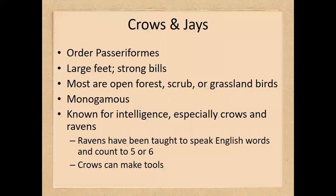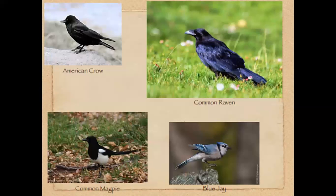Crows and jays are some of our most intelligent birds. They have large feet and strong builds for their size, and they are monogamous. They can not only mimic speech, they can count, make tools, and we are frequently impressed by their intelligence. They may not be the prettiest birds, but they are remarkably intelligent. Blue jays are also known for being bullies — they will bully other birds near bird feeders.